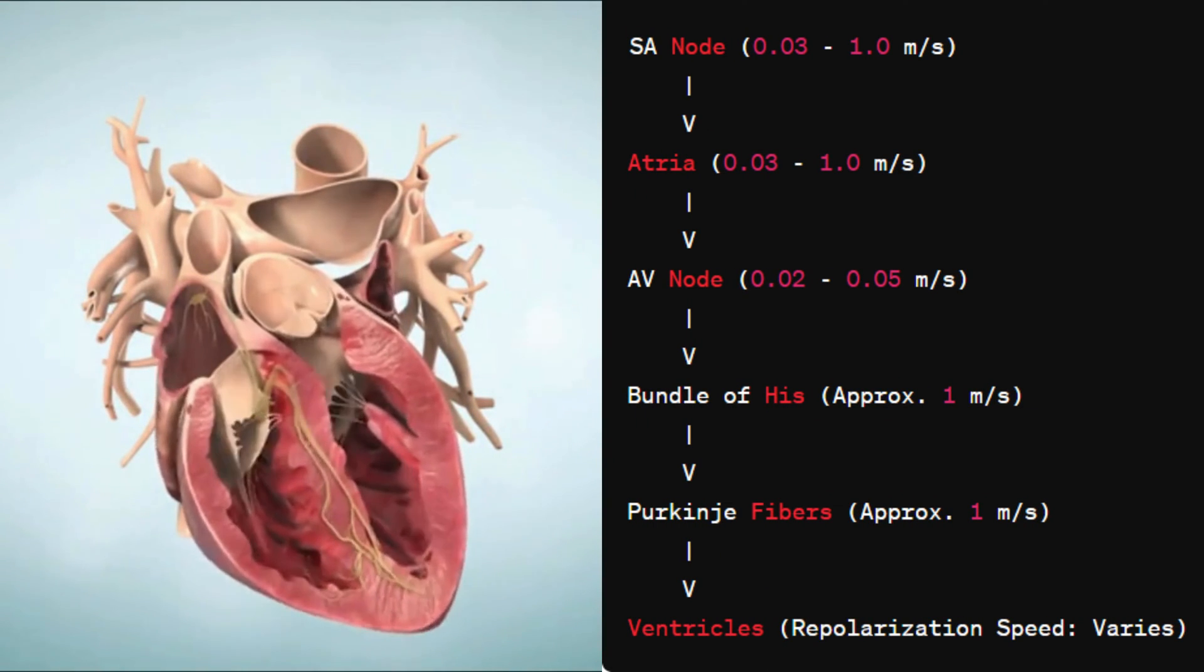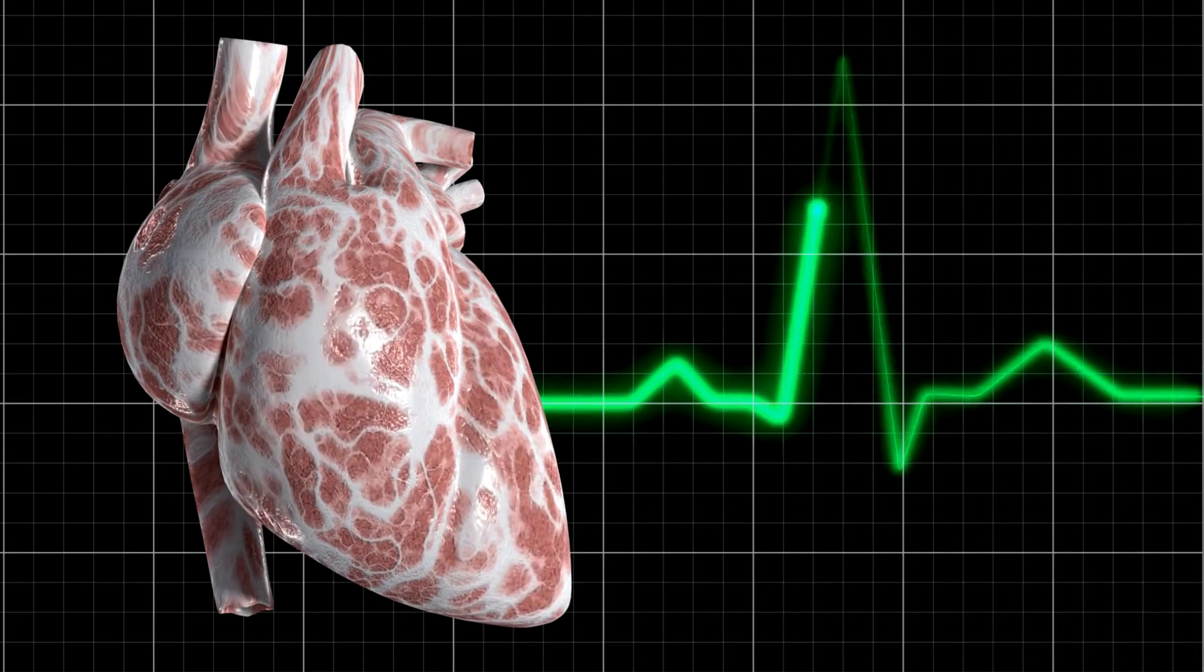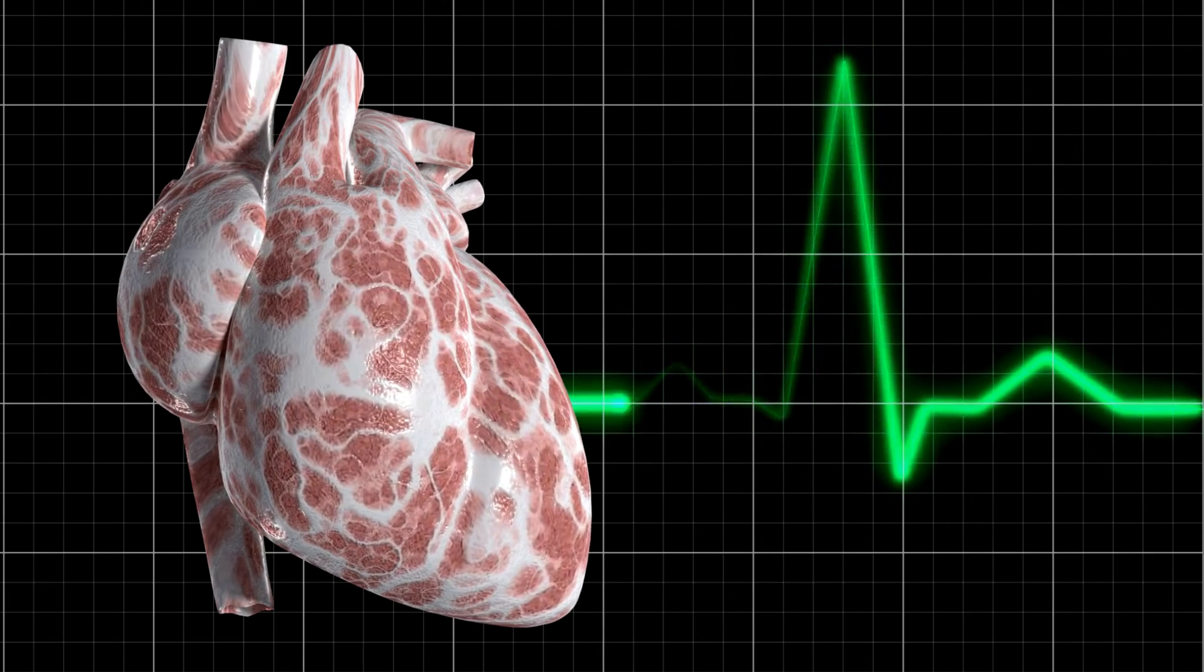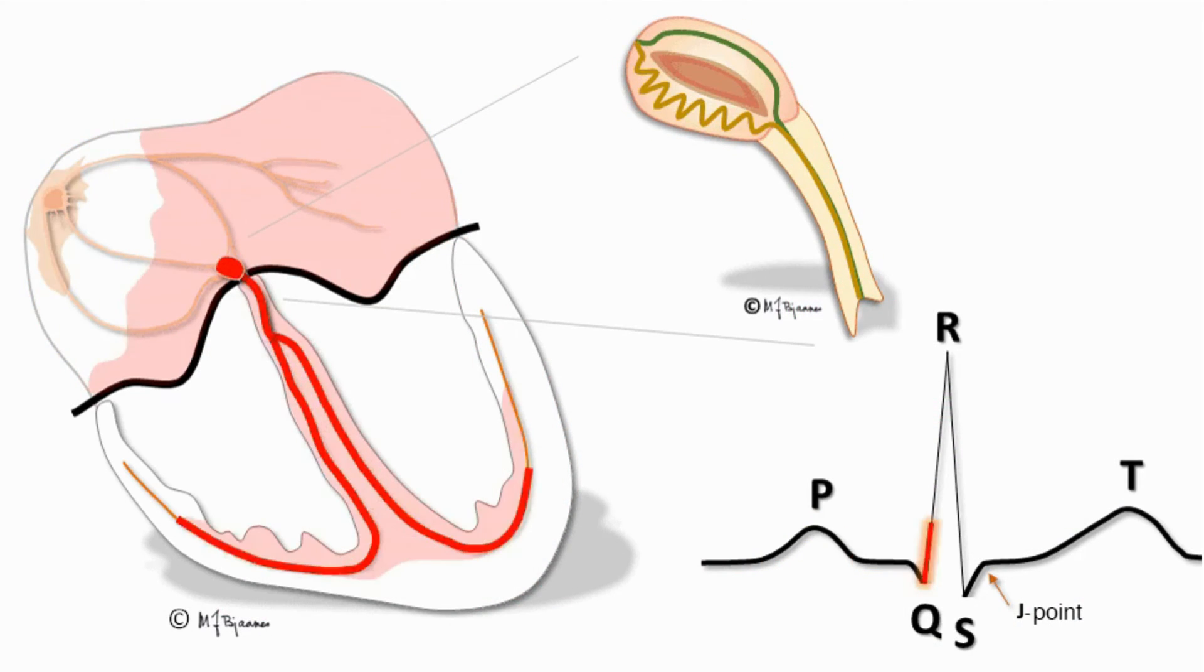Let's talk about how we measure the speed of these electrical impulses through our heart. It's actually done using something called ECG intervals. You see, an electrocardiogram, or ECG, is a test that measures the electrical activity of your heart. And the different parts of the ECG tracing represent the speed at which these impulses travel through your heart.